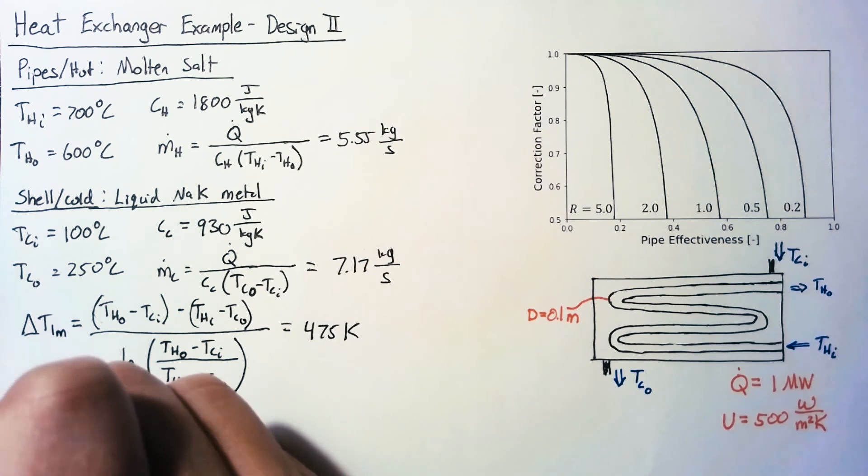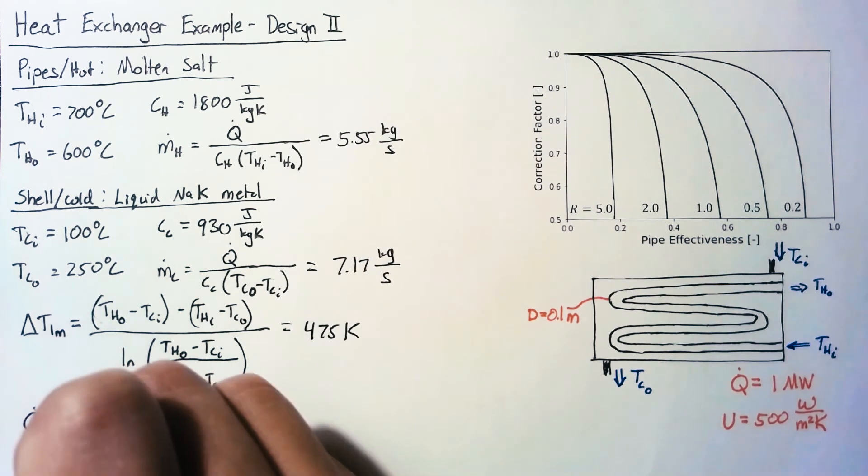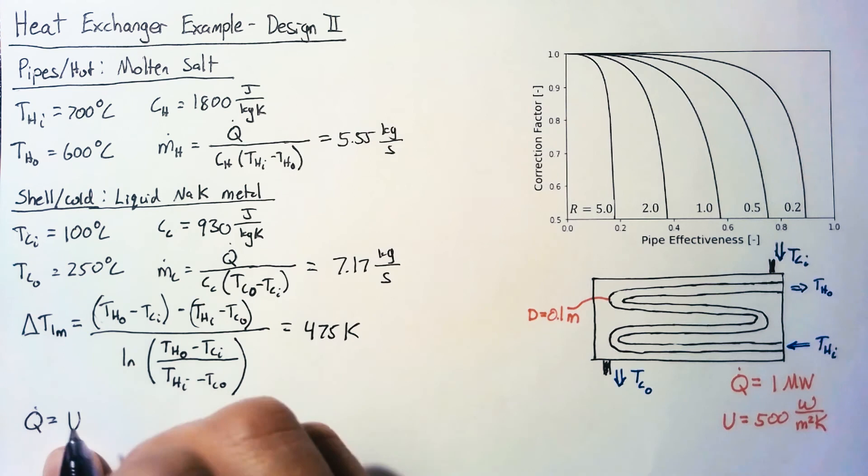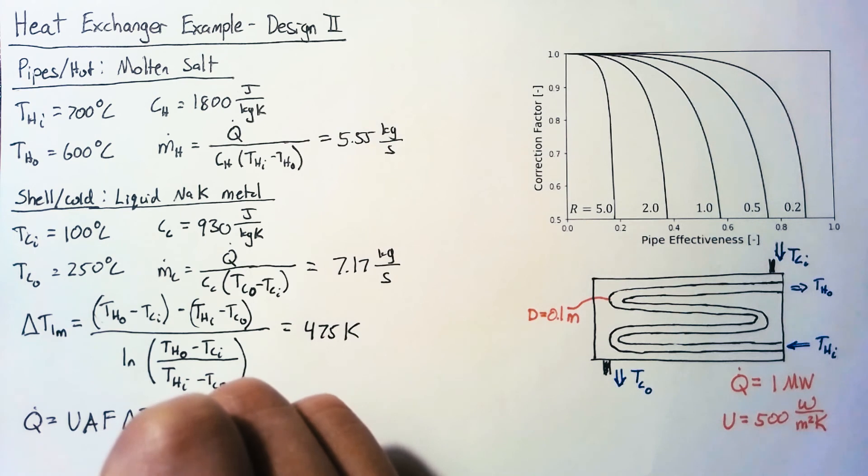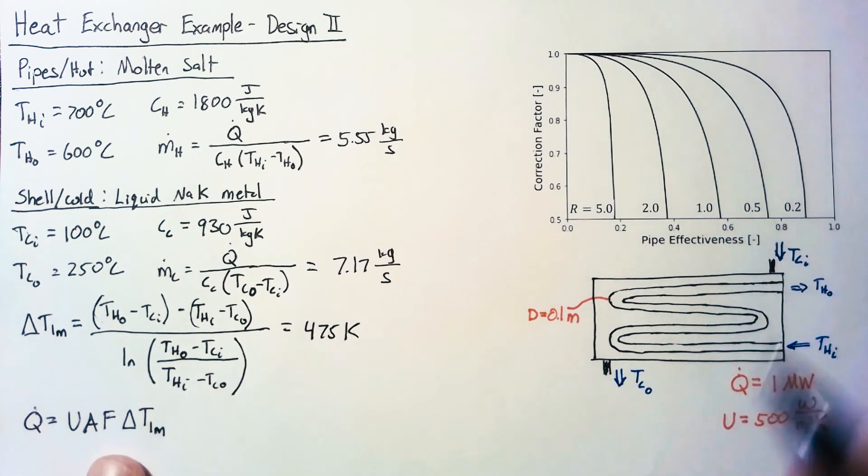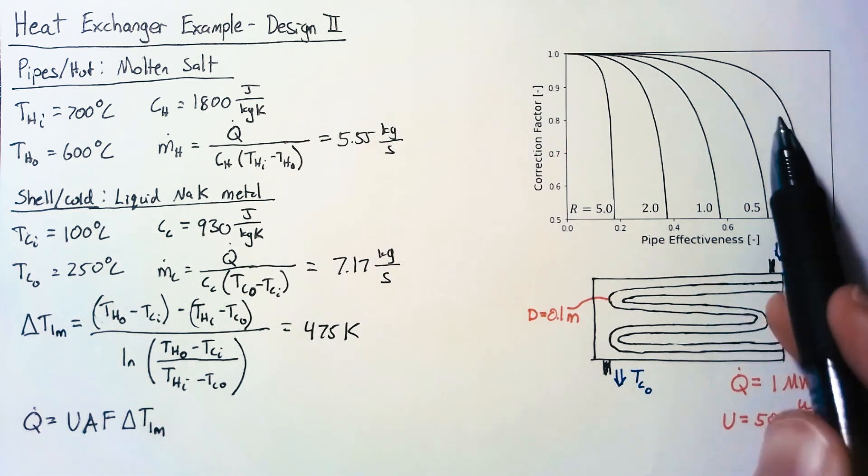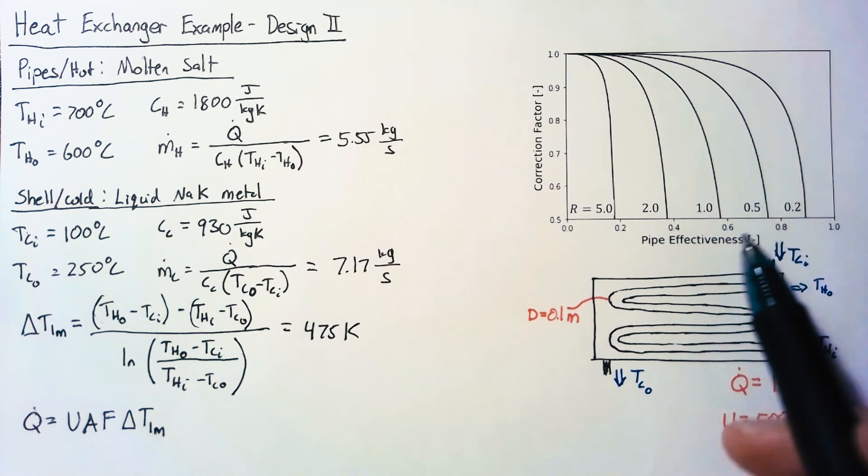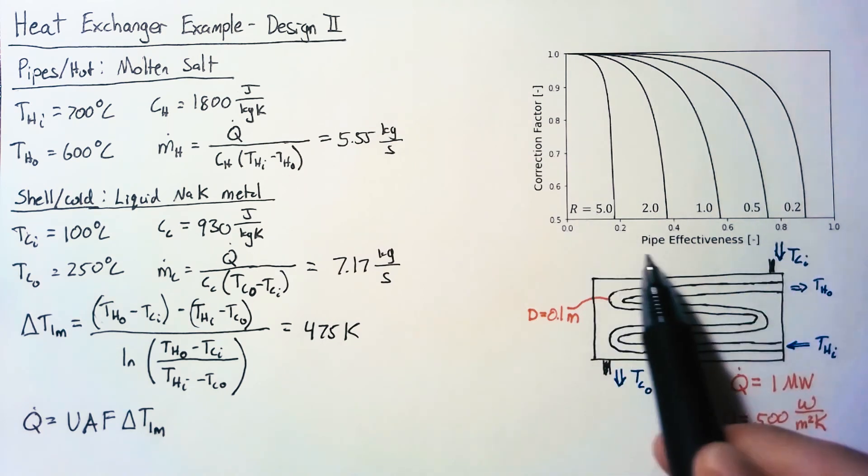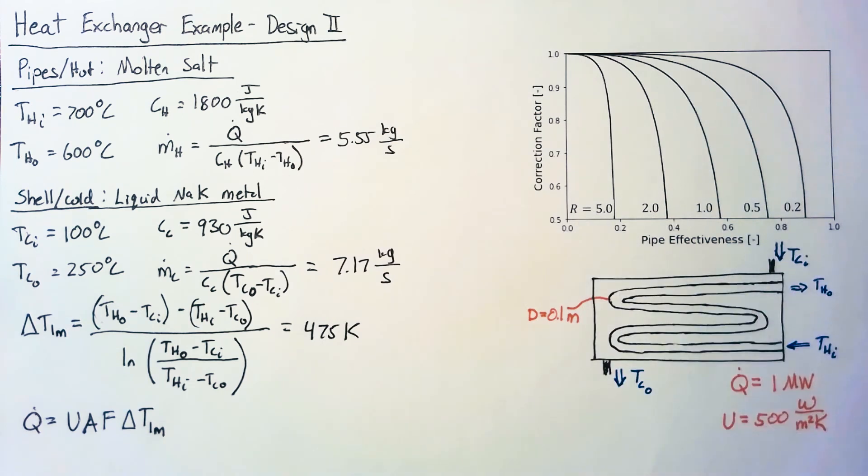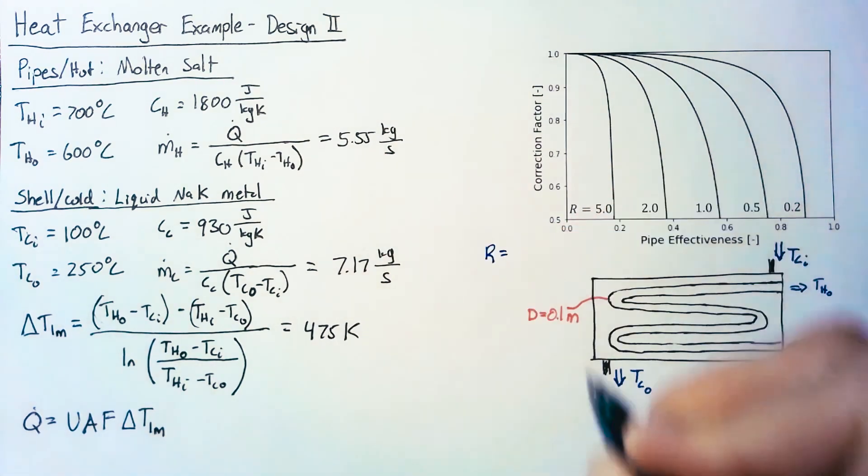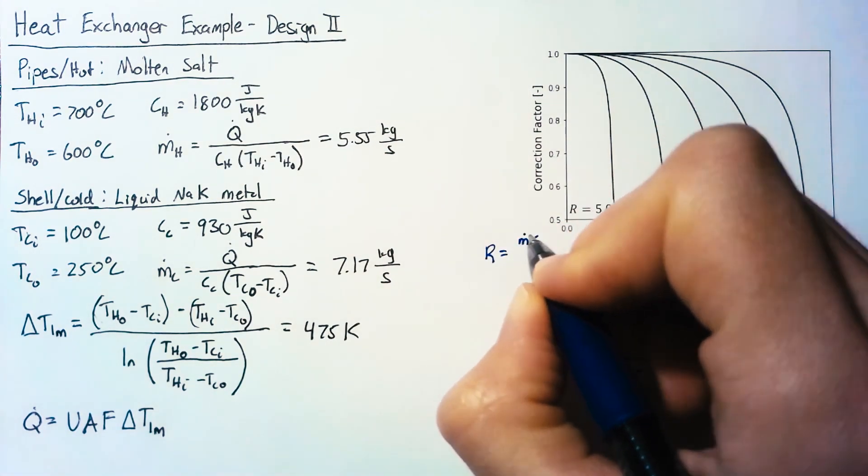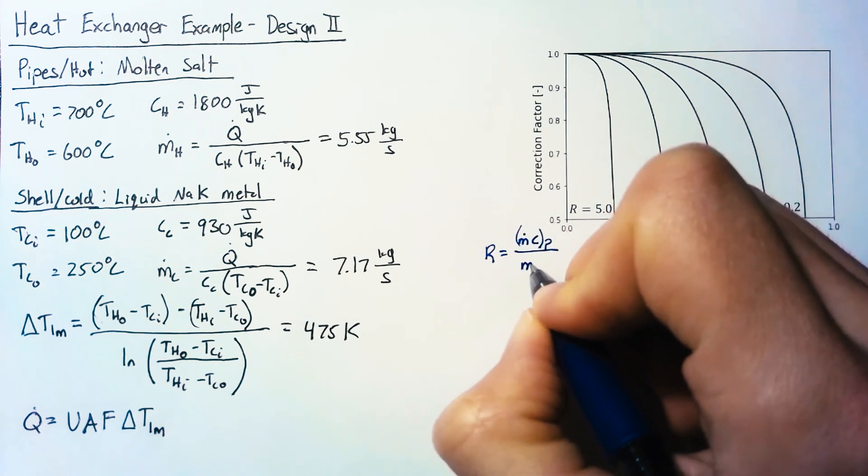So next we can plug that into our Q dot equation. Q dot is going to be our overall heat transfer coefficient multiplied by our area multiplied by a correction factor times delta T log mean. This correction factor comes from our chart over here. Our next step is to calculate the R value and then what I'm calling the pipe effectiveness for our heat exchanger.